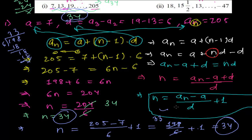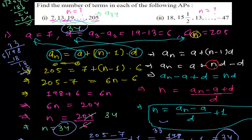Use whichever method you find easier to find the total number of terms in an arithmetic progression. For the second AP — 18, 15½, 13, ... up to -47 — try it yourself. You should get 27 as the answer. If you face any problem, comment or email me. Bye bye!